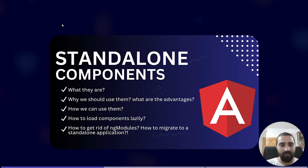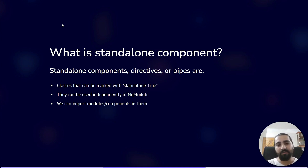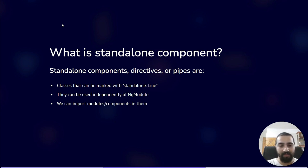Let's jump into the first topic: the standalone component definition. Standalone components, pipes, or directives are nothing but simple components marked with standalone: true. You can expect a simple component with only one property added to its decorator, which is standalone: true. There is also another property that will be added to your components — the imports array. It's like NgModule basically, but there are some technical differences between them.